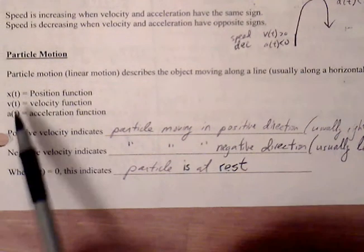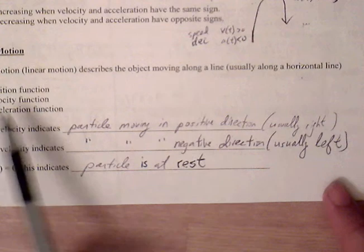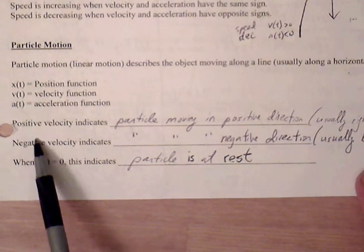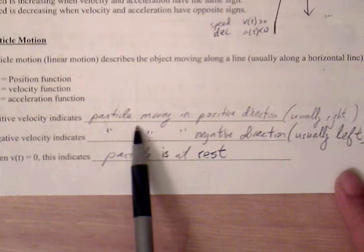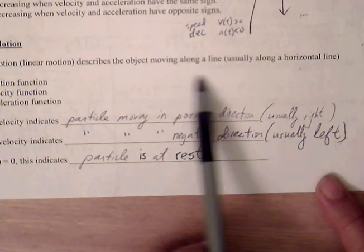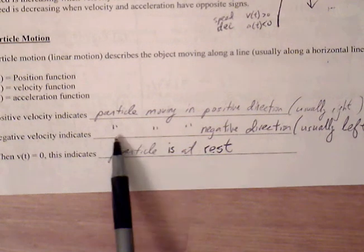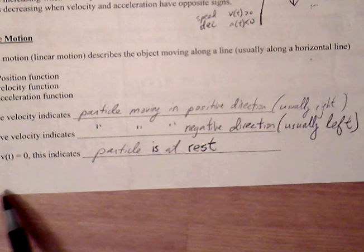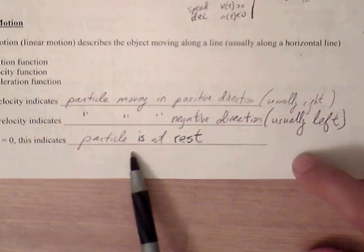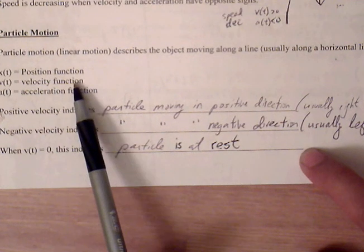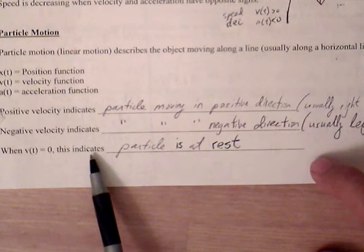Some notes about particle motion: particle motion, or linear motion, describes an object moving along a line, usually a horizontal line. You may see x of t representing the position function, v of t for velocity, and a of t for acceleration. Positive velocity indicates the particle is moving in the positive direction, usually to the right along the x-axis. Negative velocity means the particle moves in the negative direction, usually to the left. When v of t equals zero, this indicates the particle is at rest. So to find when the particle is at rest, find the velocity function, set it equal to zero, and that indicates when the object has stopped moving.